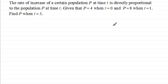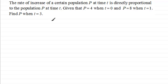We've got here: the rate of increase of a certain population p at time t is directly proportional to the population p at that time t. We're given that p equals 4 when t equals 0, and also that p equals 8 when t equals 1, and we've got to find the value of the population p when t equals 3.